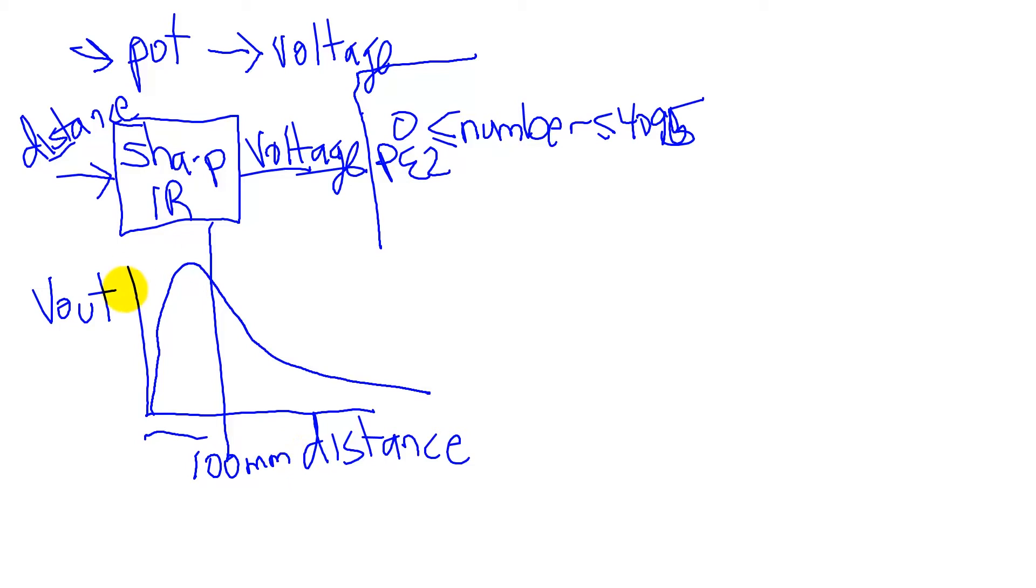it behaves in this weird way. But after 100 millimeters, it behaves in a very simple way, such that the distance is approximately equal to some constant over the voltage.